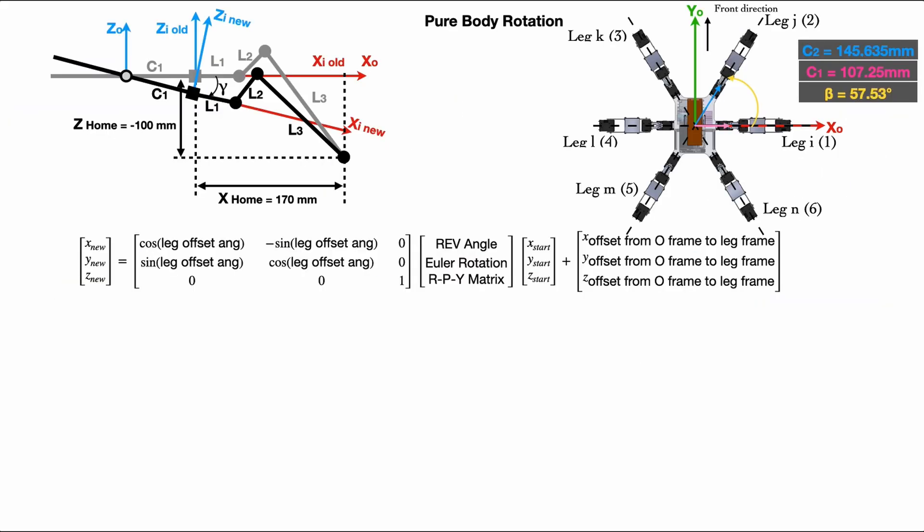And Pb in this equation is the initial position point before applying the body rotation in the frame O. And the last term is the translation offset from frame O to each leg frame. From the design, we know the parameters in body frame as C1, C2 and beta angle. Then the rotation matrix from body frame to each leg frame. The offset angle is shown as here: I is 0 degree, J is minus beta, K is minus pi minus beta, L is minus pi, M is pi minus beta, and N is beta.